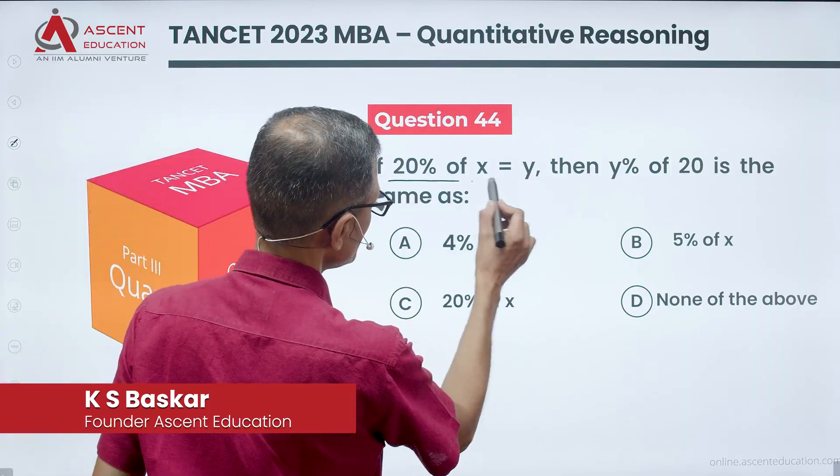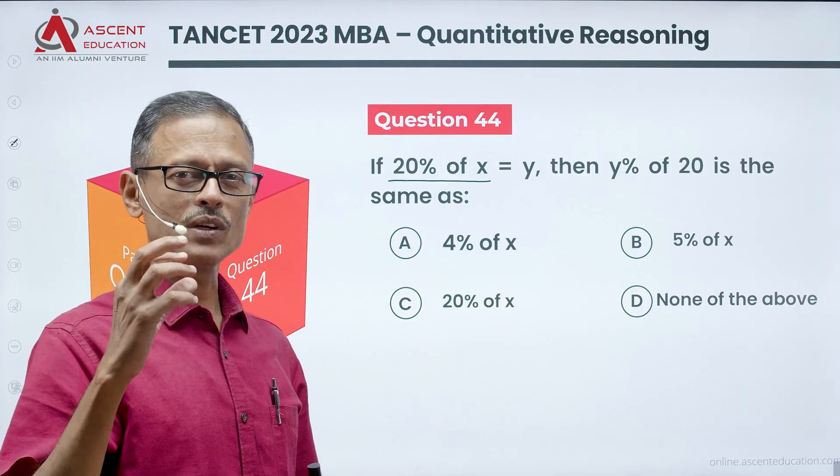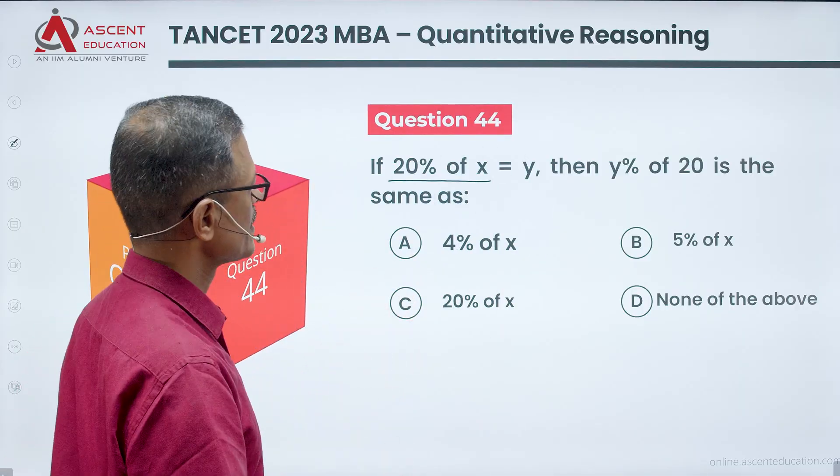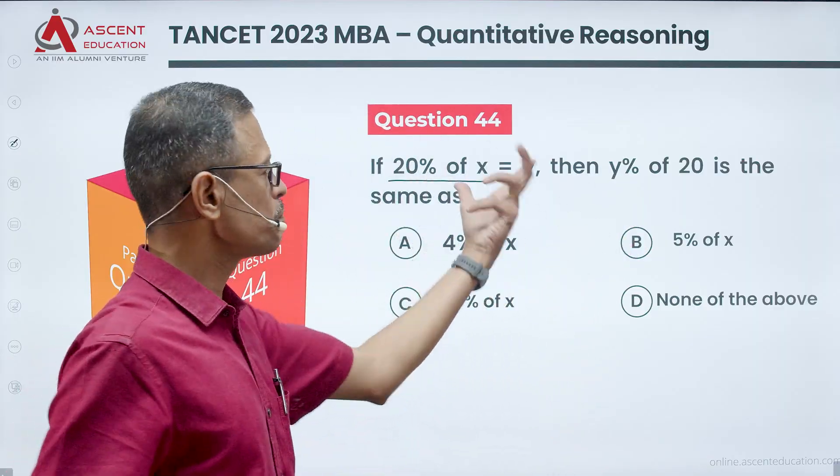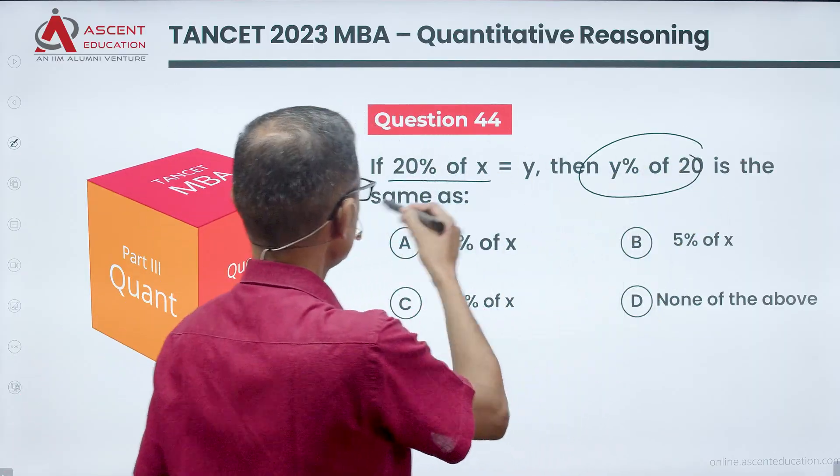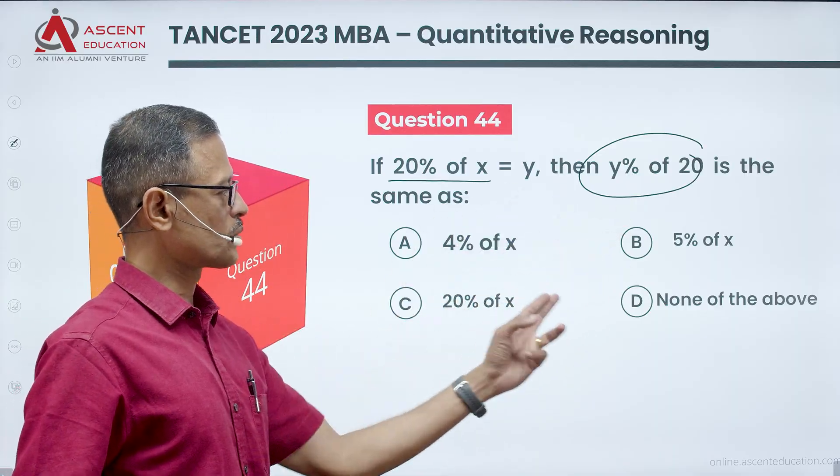If 20% of x is equal to y, then y% of 20 is the same as... If you look at the answers: A) 4% of x, B) 5% of x, C) 20% of x, D) None of the above.